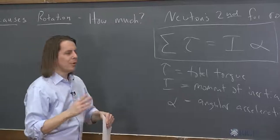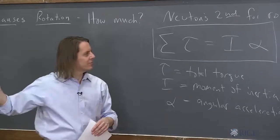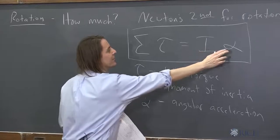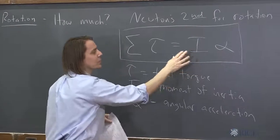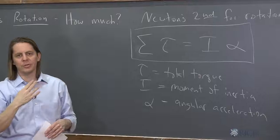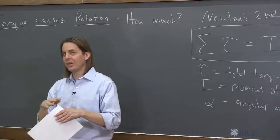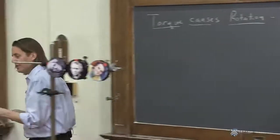So now we can maybe understand why our disks of the same mass ended up going at different angular accelerations. It's because we know that moment of inertia depends on more than just the mass. It depends on the mass and how the mass is distributed.